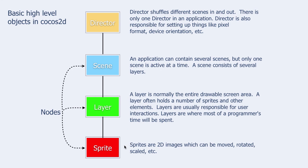A sprite is a 2D image which can be moved, rotated, scaled, etc. Sprites, layers, and scenes are nodes. In other words, a node is a super-class of a sprite, layer, and scene. These five objects — director, scene, layer, sprite, and node — are the most important ones in Cocos2D, but there are many others.